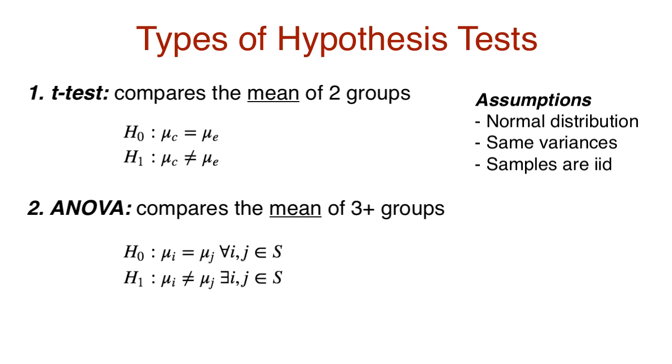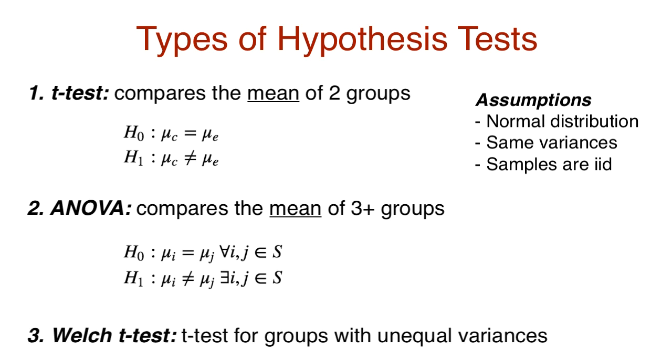If data doesn't have the same variance, and the sample sizes are uneven, then we can think about using the Welch test. But this is a modification of the t-test for skewed sample size groups. Tests like ANOVA and the t-test are parametric tests. They have strong assumptions, but the hypothesis is also quite strong.